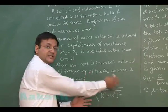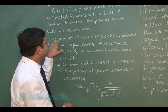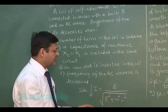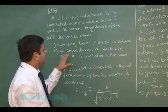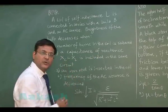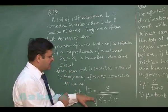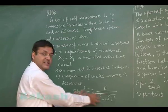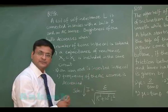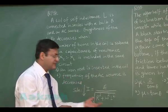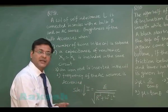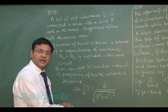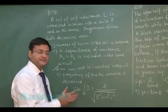For the brightness to decrease, the current must decrease, so either the EMF decreases or the denominator increases. Option 1 — reducing turns — decreases inductance, so that's wrong. Option 2 — XC = XL — is a resonance condition that reduces the denominator, also wrong. Option 3 — inserting an iron rod in the coil — increases inductance by increasing permeability, which is correct. Option 4 — decreasing frequency — also reduces the denominator. So the correct option is the third one.